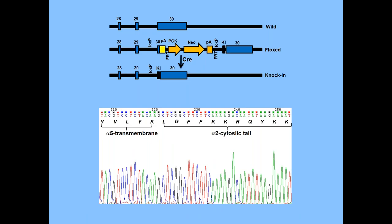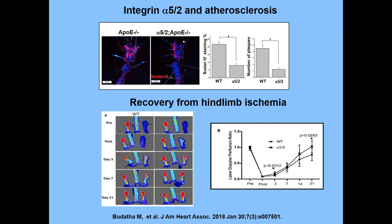That finding in vitro prompted us to make a mouse — a knock-in mouse in which the alpha-5 cytoplasmic domain was replaced with that of alpha-2. Those mice are happy and healthy, and when bred into APOE-knockout mice on a high-fat diet, they develop less atherosclerotic plaque than normal APOE-minus mice. We also did hind limb ischemia experiments, and they recover a little bit faster than wild-type mice. So in vivo, this integrin mutation is anti-inflammatory.